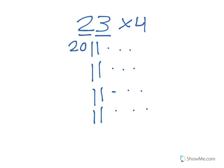And then you would do this. 20, 40, 60, 80. And then three, six, nine, 12.